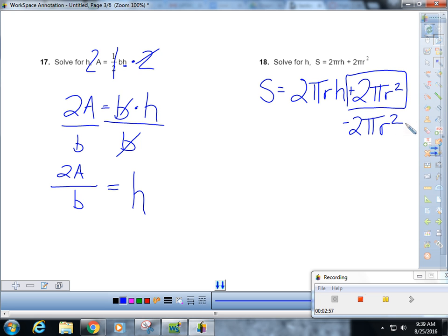You get s minus 2 pi r squared equals 2 pi r h. What are we solving for? h.